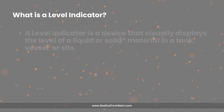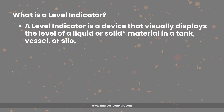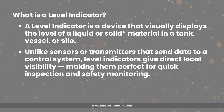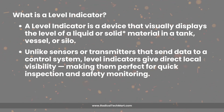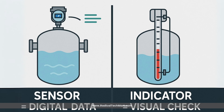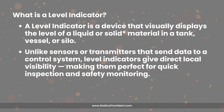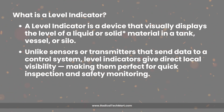First, let's start with what a level indicator is. A level indicator is a device that visually displays the level of liquid or solid material in a tank, vessel, or silo. Unlike sensors or transmitters that send data to a control system, level indicators give direct local visibility, making them perfect for walk inspection and safety monitoring.